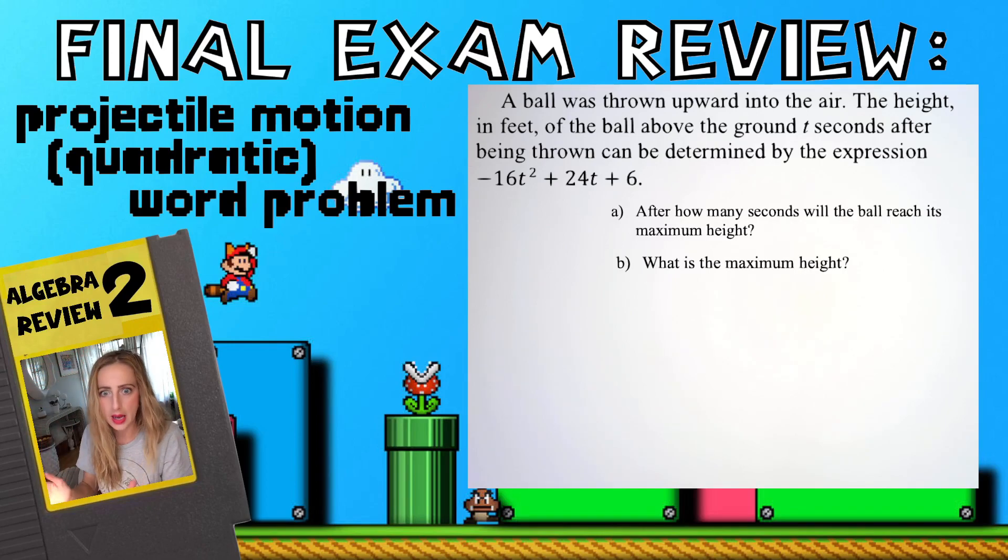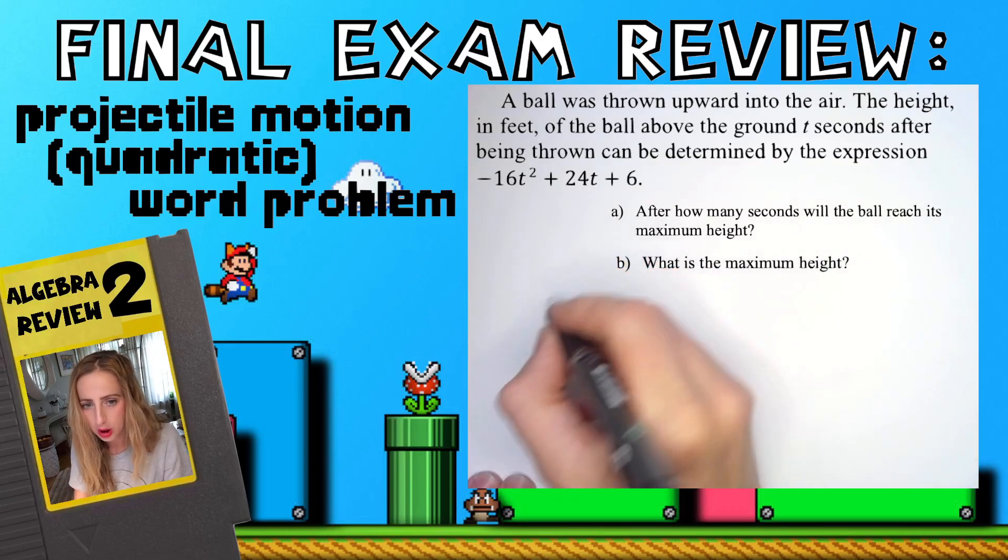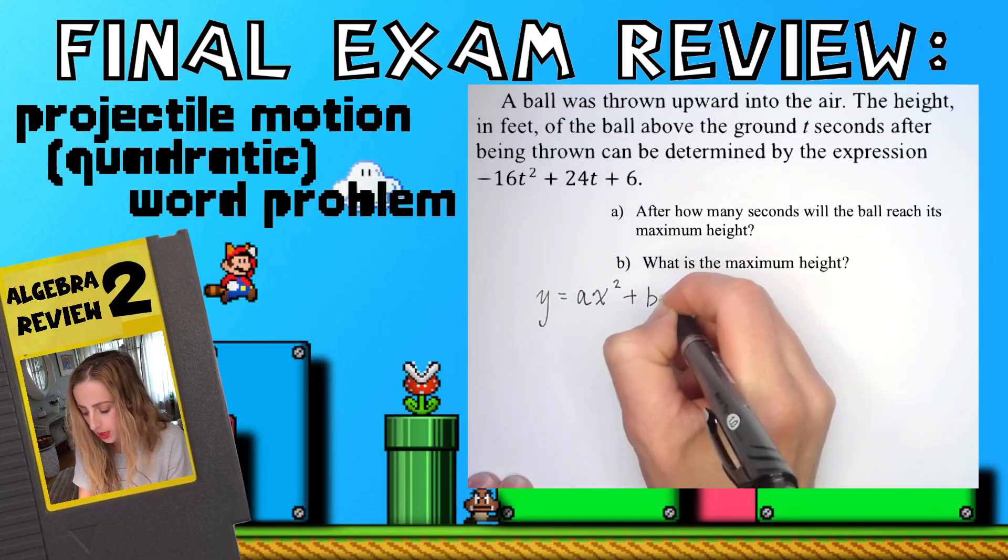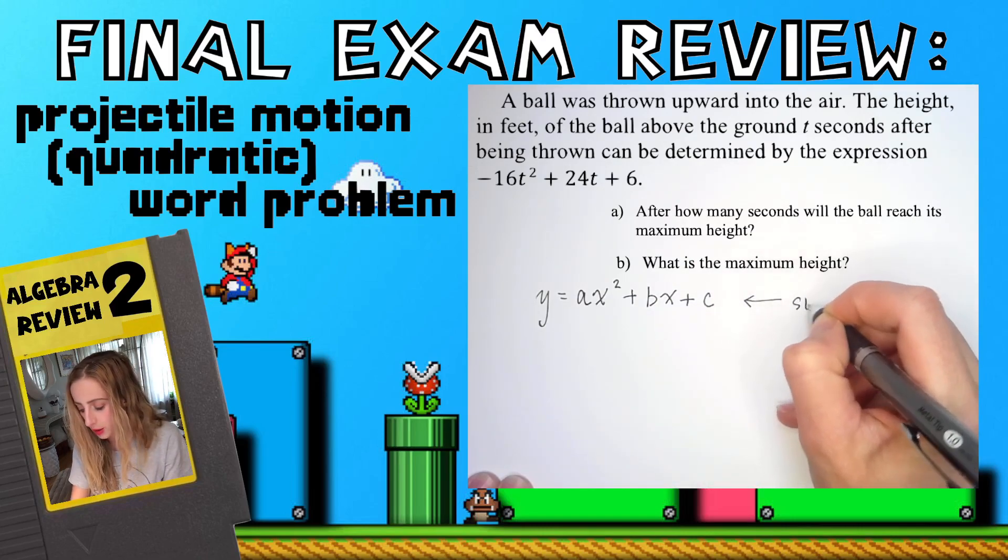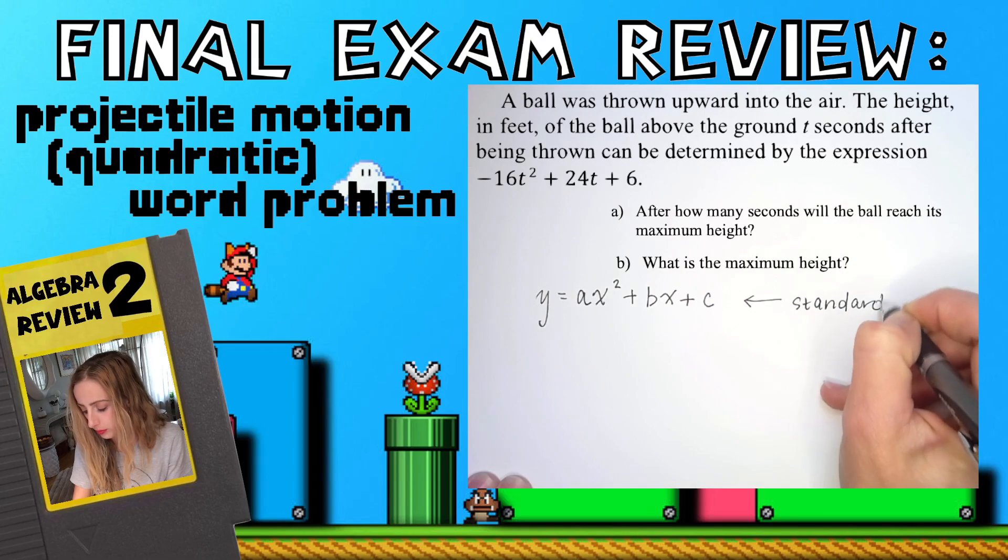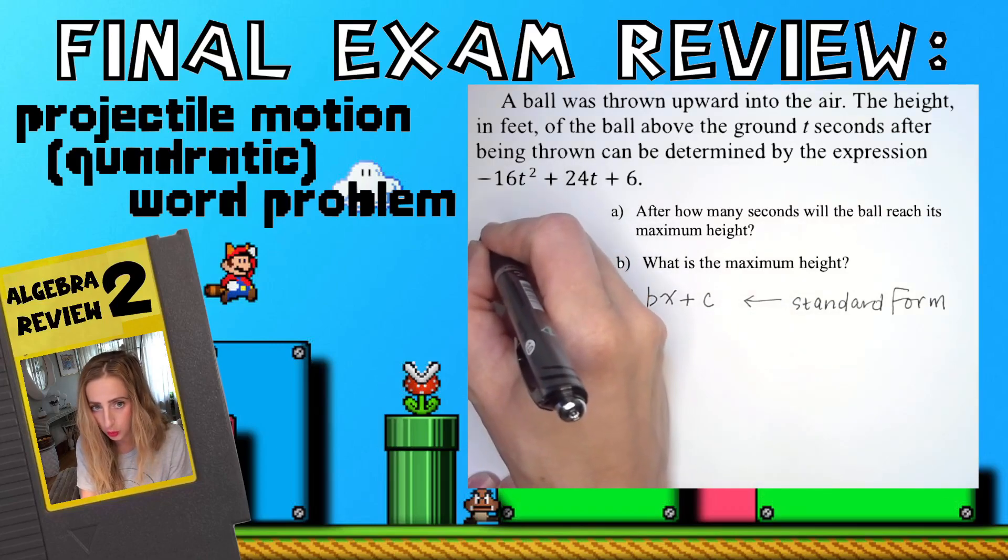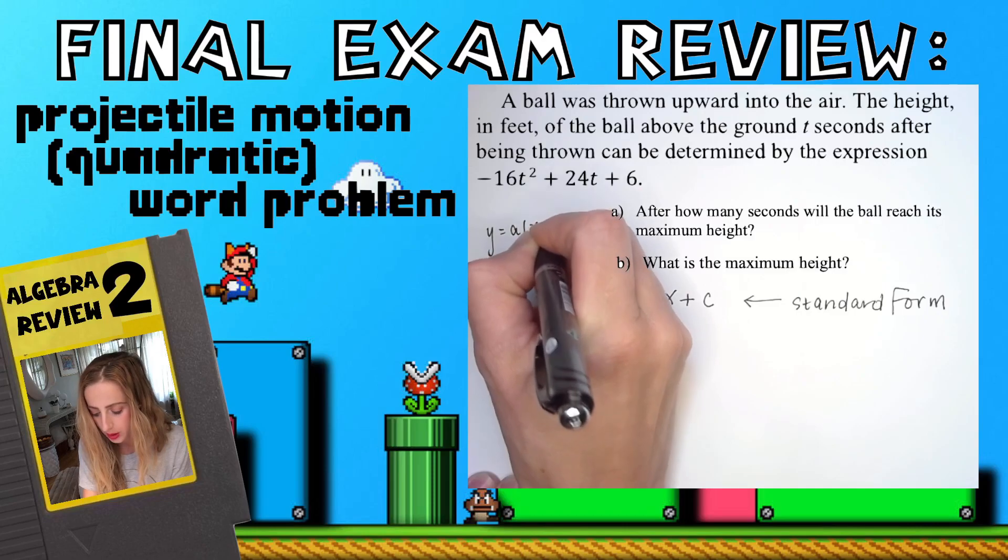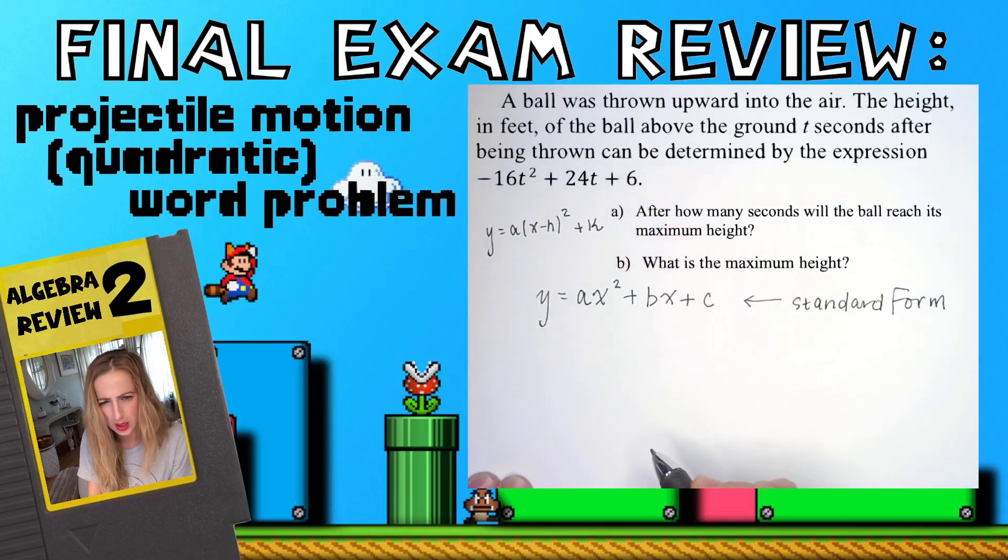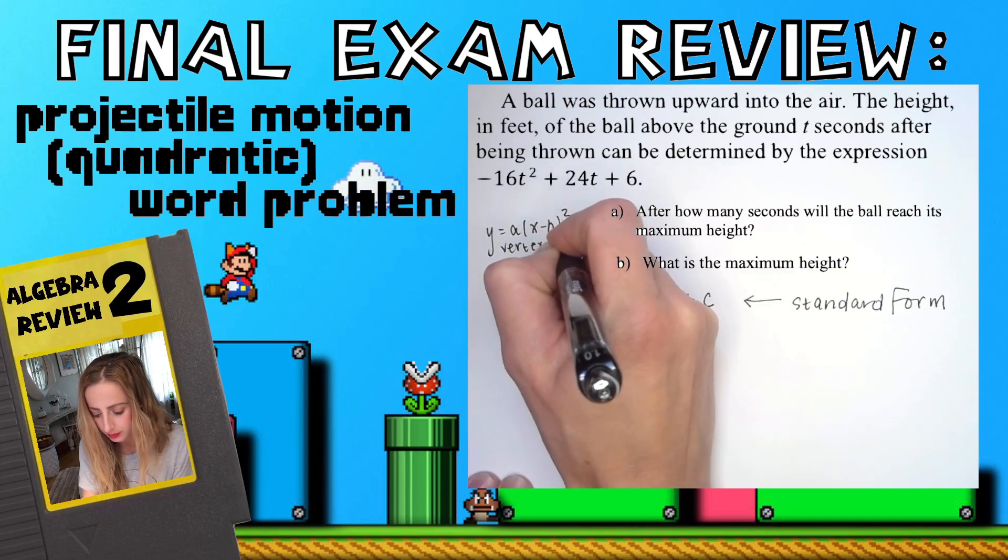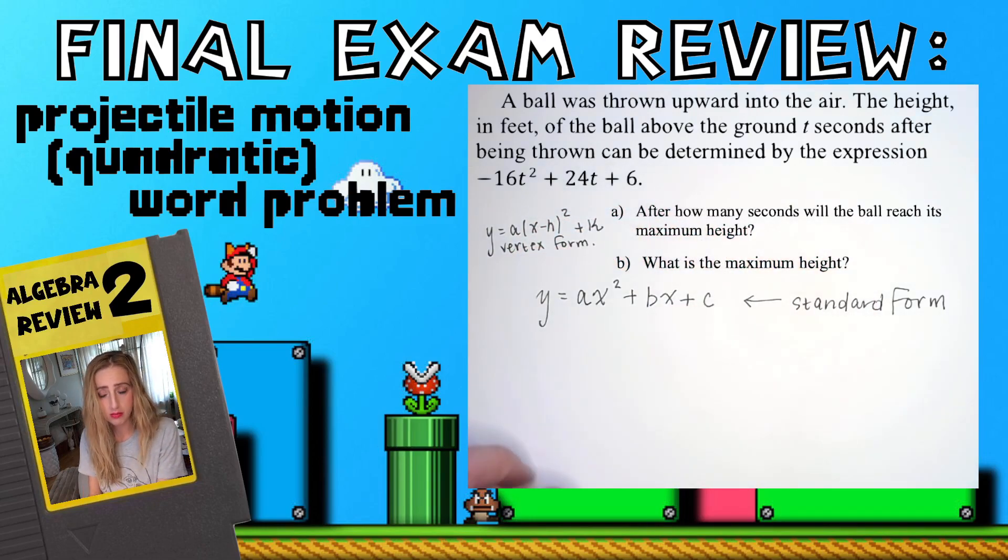After how many seconds will the ball reach its maximum height? Well, since it's a quadratic model, a couple things we've got to consider. y equals ax squared plus bx plus c, this is standard form of a quadratic, not vertex form. We've seen vertex form quite a bit: y equals a(x minus h) squared plus k. That is vertex form and we love it for a lot of reasons. One of those reasons is it's very easy to find the vertex, so it's very easy to graph.